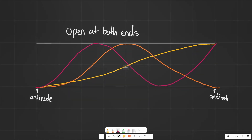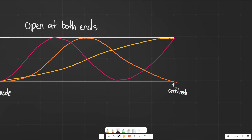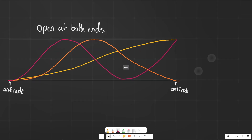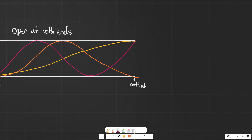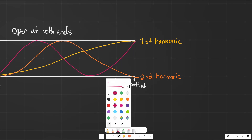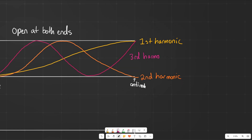These are the three simplest waves that we can create in a tube that's open at both ends. These are also what we would call harmonics. As we go from simpler to more complex, we go from the first harmonic to, in this case, the third harmonic. So this yellow is the first harmonic, the orange was the second harmonic, and this purple was the third harmonic.